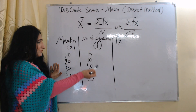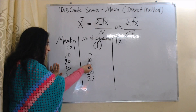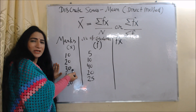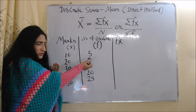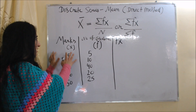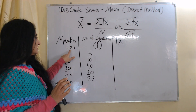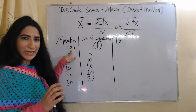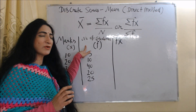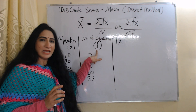Frequencies are given like: 5 students got 10 marks, 10 students got 20 marks, 40 students got 30 marks, and so on. In the first column, marks of students are given, represented by x. In the second column, number of students are given, represented by f.